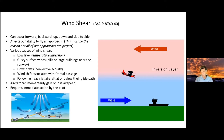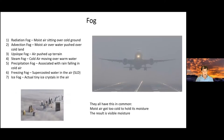Fog — regardless of the type — always shares one thing: the moist air got cold enough to reach its dew point, producing condensation. That creates clouds or fog. It's air that got too cold to hold its moisture.